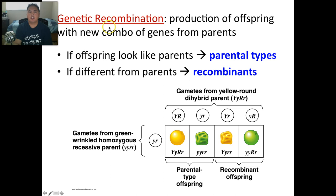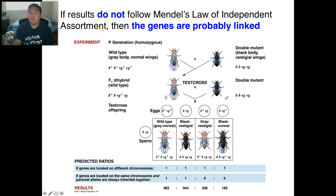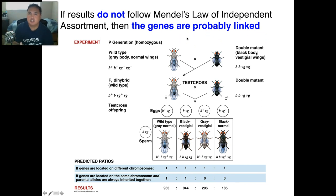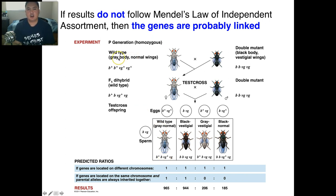Genetic recombination is the production of offspring with a new combination of genes from parents. If the offspring look like the parents, they're called parental types. If they're different, they're called recombinants. If results don't follow the law of independent assortment, the genes are probably linked. In independent assortment, color and shape are two separate things. But if they don't follow Mendel's law, the genes are linked together — and when testing crosses in these flies, some things are actually grouped together.